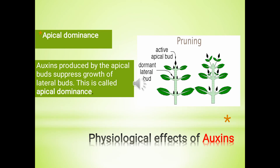Number 3: Apical dominance. Apical buds, or we can say terminal buds, release auxin and it inhibits, or we can say suppresses, the growth of lateral buds so that the plant may grow vertically. This is called apical dominance. When we prune the terminal bud, dormant lateral buds develop and produce bushy plants.